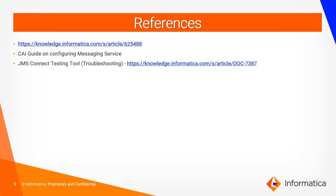That was all about the demo. This KB article can be referred, which has detailed information on how the queue and queue manager along with the binding file has to be generated and how the configuration on CAI has to be done. The CAI guide also has information on the same. As part of troubleshooting, there is a JMS test connect tool which can be used for any issues encountered when configuring JMS on the CAI side. This tool can be used as a standalone tool on a different machine or the same machine to test connectivity to the queue and ensure it works fine.